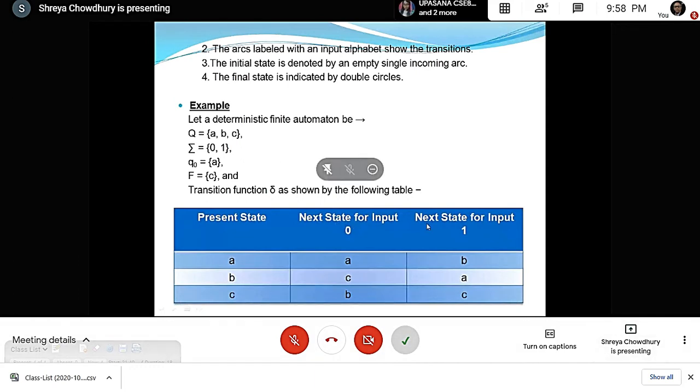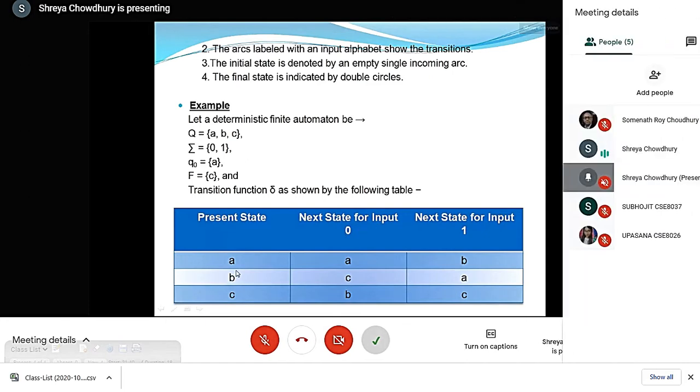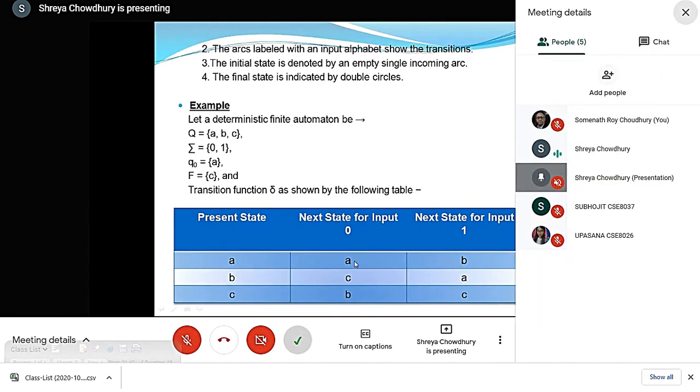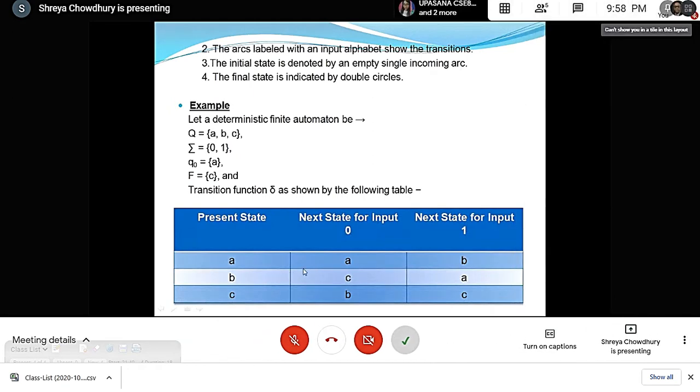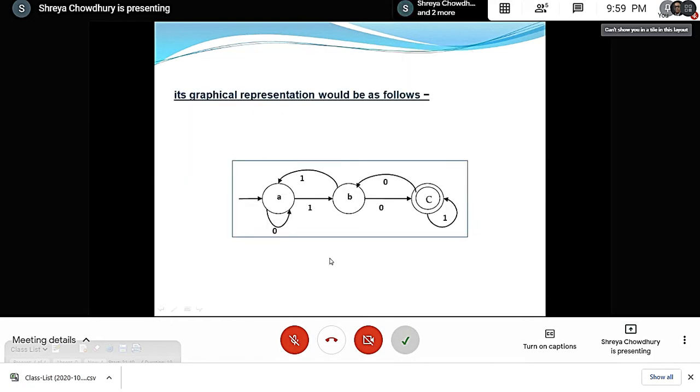For state A, input 0 goes to A, input 1 goes to B. For state B, input 0 goes to C, input 1 goes to A. For final state C, input 0 goes to B, input 1 goes to C.